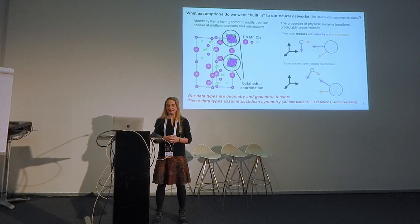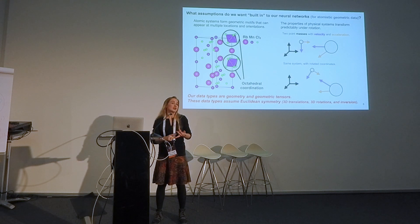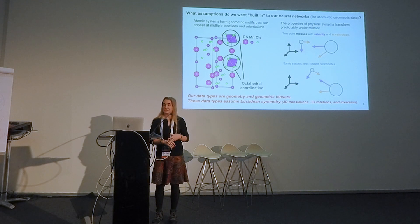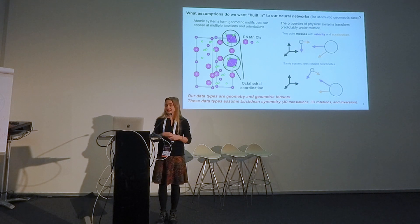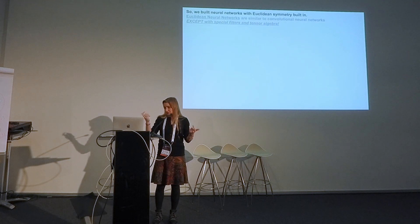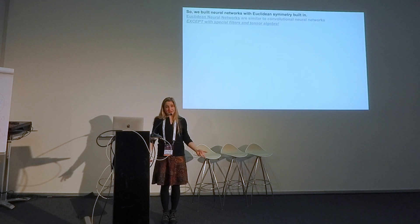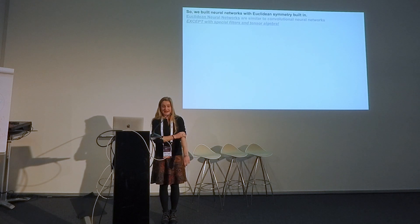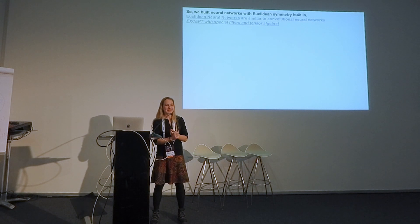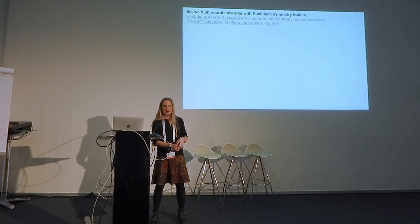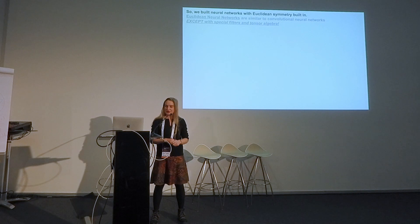Our data types are geometry and what are called geometric tensors — properties that transform under rotation and translation — and these data types assume Euclidean symmetry. So first we built neural networks that have Euclidean symmetry baked in, called Euclidean neural networks. Originally called tensor field networks, 3D steerable CNNs, or Clebsch-Gordan networks, but now we're rebranding to a unified Euclidean neural network framework.